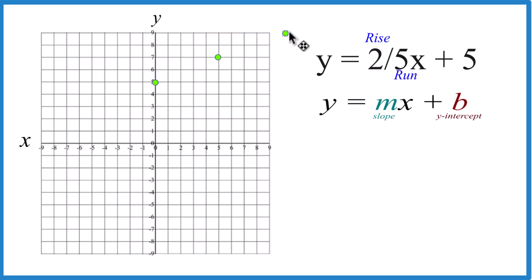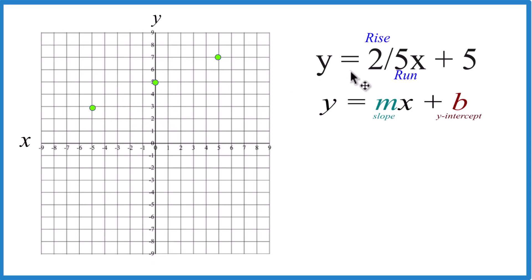We're off the graph. So let's do this — let's go to the y-intercept, go down 1, 2, and then to the left 1, 2, 3, 4, 5. That'll give us the line for y equals 2 fifths x plus 5.